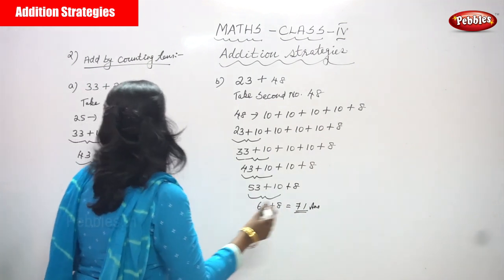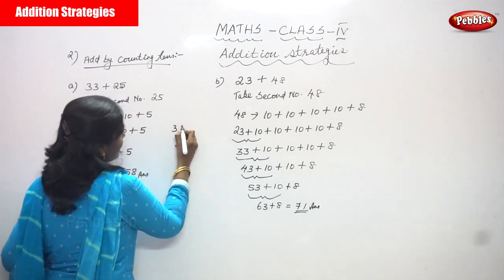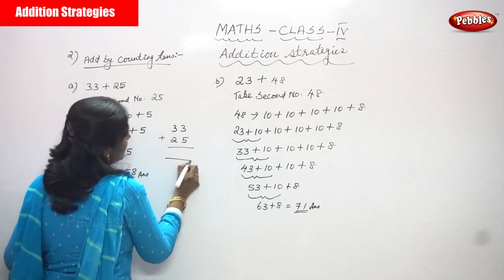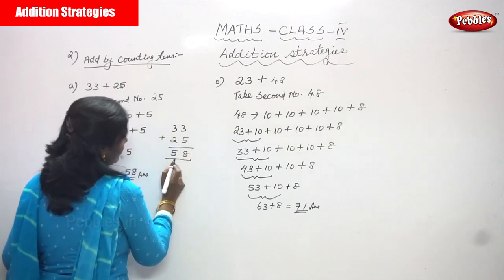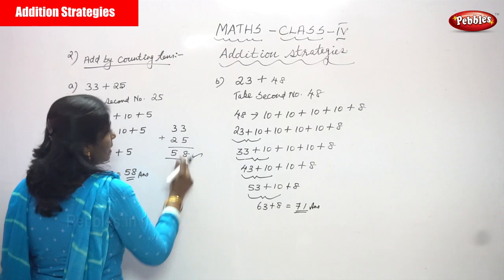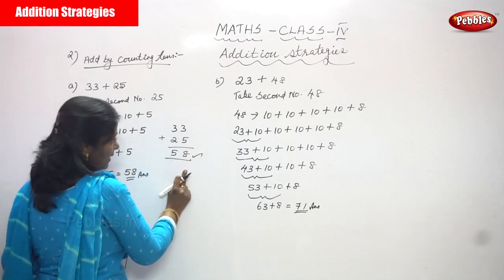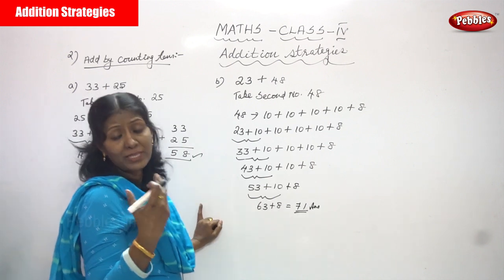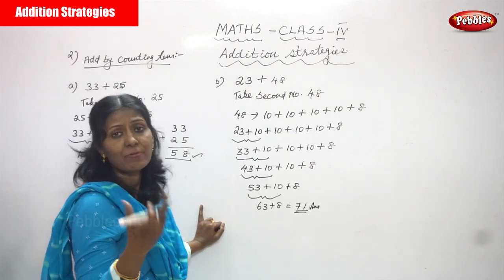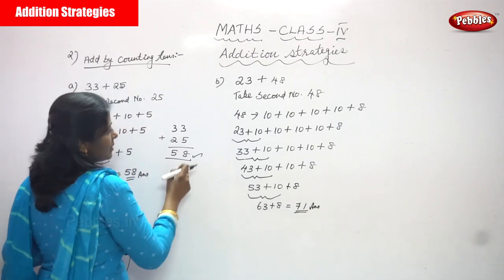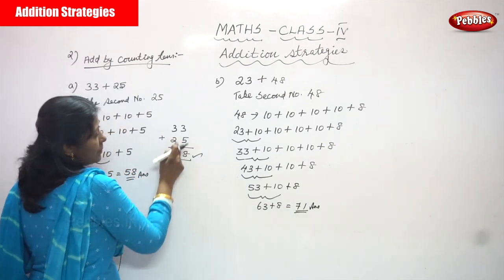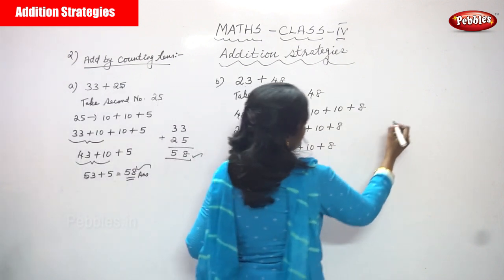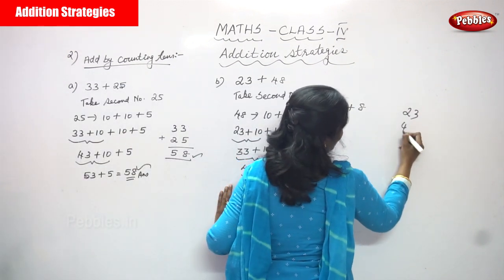Even with the simple general addition method: for 33 plus 25, 3 plus 5 is 8 and 3 plus 2 is 5, giving 58. Both answers are correct. Similarly, general addition for 23 plus 48 also gives the same result.